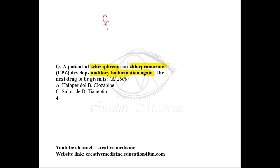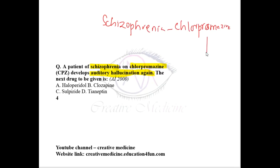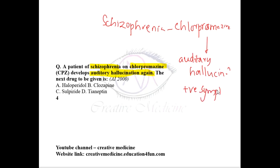The patient first has schizophrenia and he is on chlorpromazine. Now he has developed auditory hallucinations. Remember, these auditory hallucinations are actually positive symptoms. So the patient is not recovering with chlorpromazine, which means the patient has developed resistant schizophrenia.